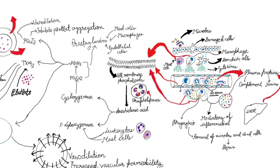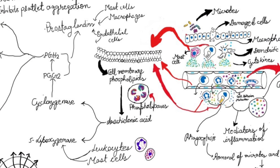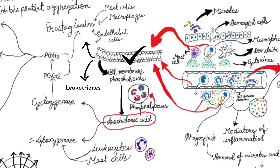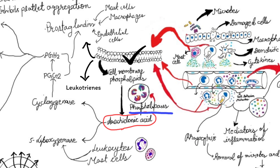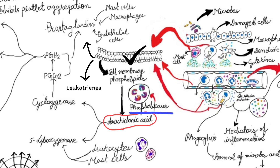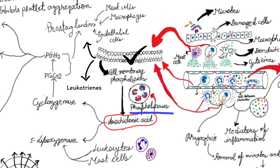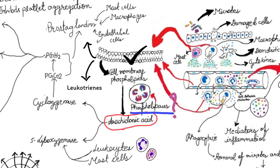Some mediators are derived from the cell membrane of cells. These include prostaglandins and leukotrienes. They are derived from arachidonic acid, which is present in the cell membrane. When the enzyme phospholipase acts on this arachidonic acid, it gets activated during inflammation.